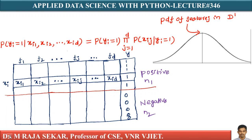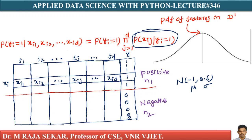If I know this distribution — we already discussed about this probability density function in my previous lecture — if I know this distribution has mean minus 1, let me say capital N of minus 1 comma 0.6, what does it mean? Mean μ equals minus 1 and standard deviation σ equals 0.6. If I know this, then I can compute the probability of x_ij. I can compute probability of x_ij given y equal to 1. Let this x_ij be 2.62.